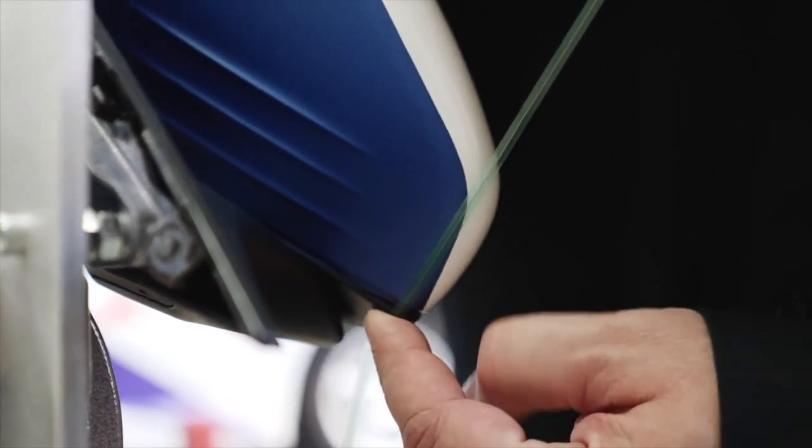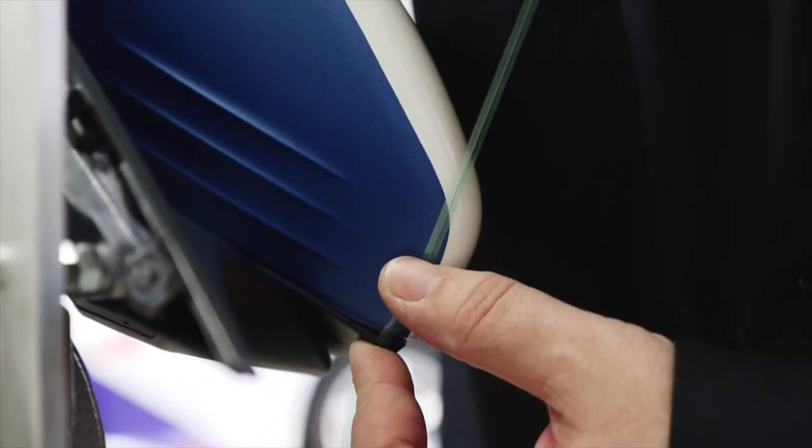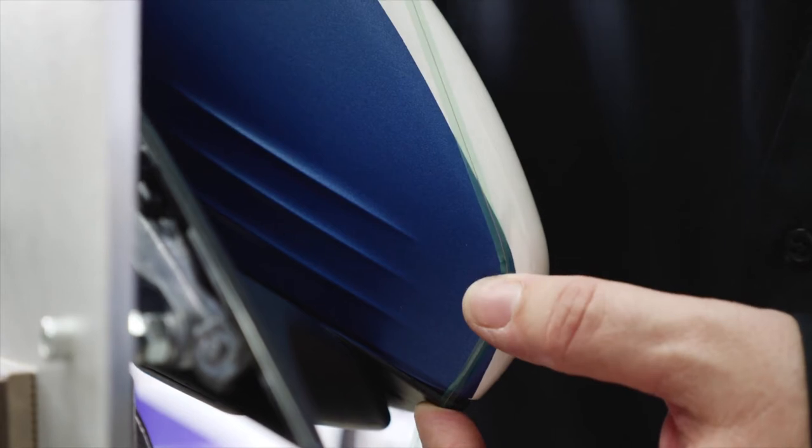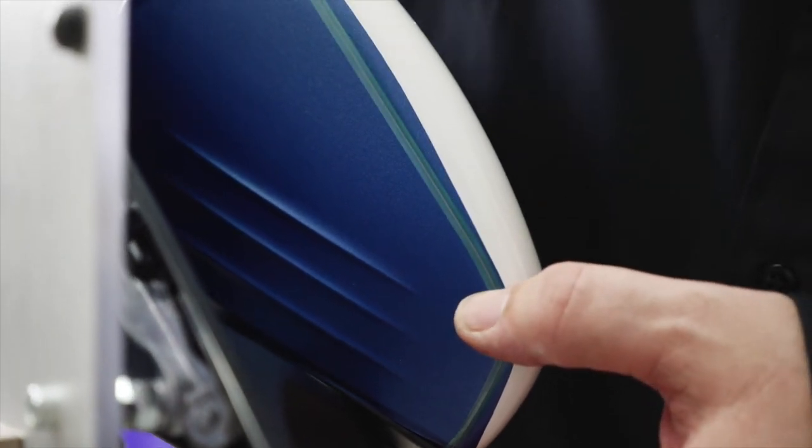Once again, using knifeless tape design line, apply the tape approximately 1mm from the edge of the film. Press the knifeless tape onto the film.